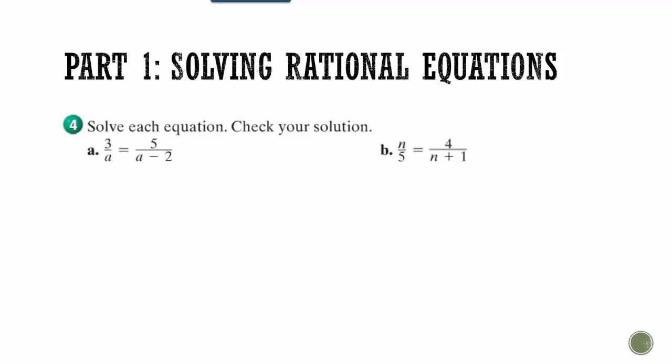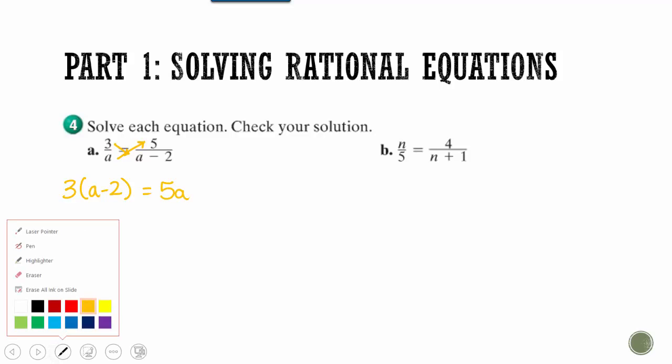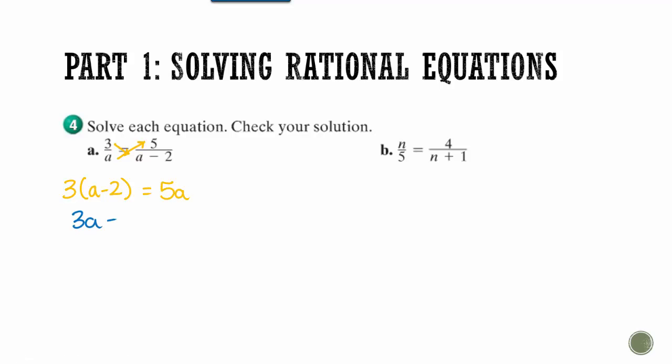So whenever you get something like this, we can find our cross products. So 3 times A minus 2 has to be exactly the same as 5 times A. Same rules apply regardless of what section we're going to do. And we've got to distribute this. And then we can solve. So if I subtract my 3A from both sides, I get 2A over here. Divide both sides by 2 and I get negative 3. And remember, you can check these. So do that on a test or a quiz. Is 3 divided by negative 3 the same thing as 5 divided by negative 3 minus 2? Negative 1. This gives you 5 over negative 5, which is also negative 1. I know I got the right answer.